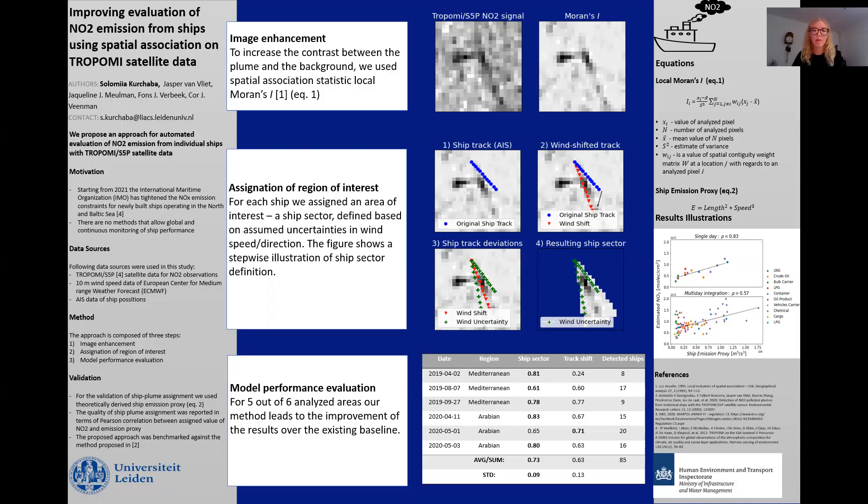Thus today, we propose an approach for automated evaluation of NO2 emission from ships using TROPOMI SVP satellite data. The satellite provides us with atmosphere monitoring data with unprecedentedly high spatial resolution of 3.5 x 5.5 km, which for the first time allows us to distinguish NO2 plumes from individual ships.